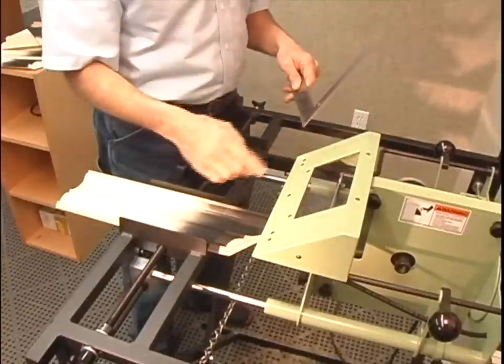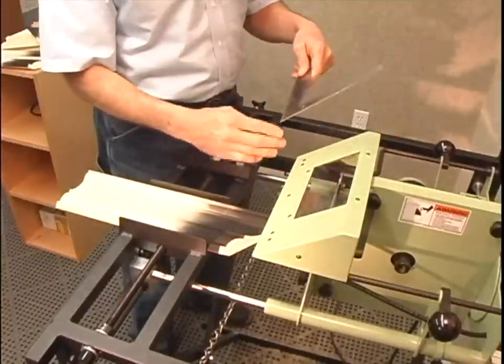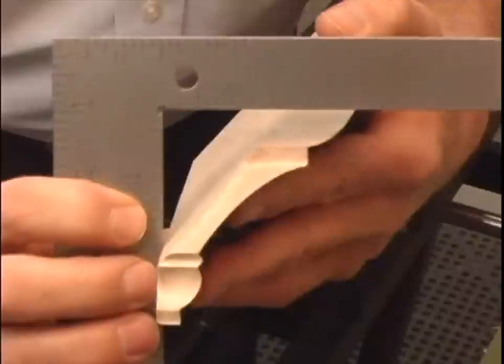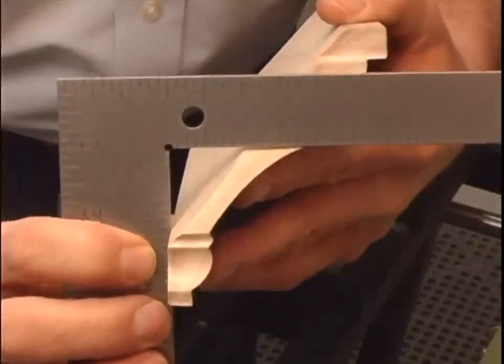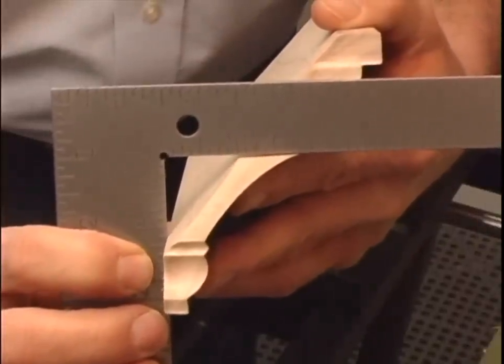For crown or any other sprung molding, you need to set the blade perpendicular to the bedding foot that sits on the wall. Here is a finished coat that clearly shows the blade cut is perpendicular to the wall.